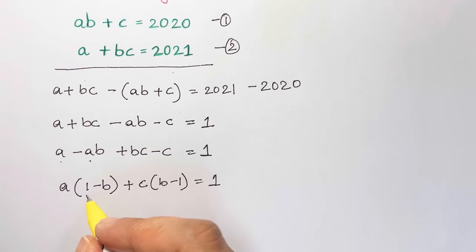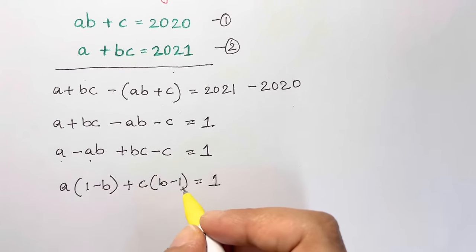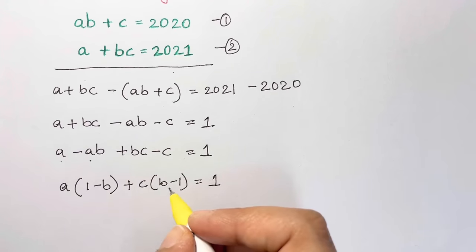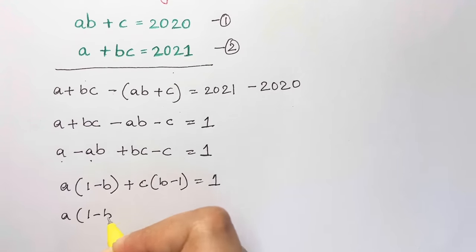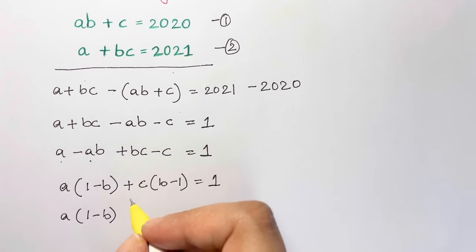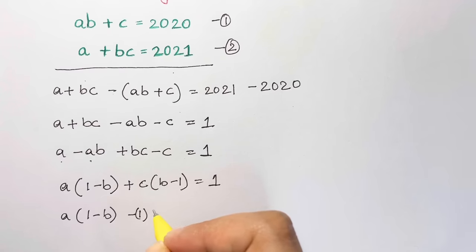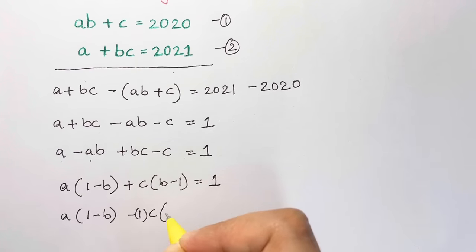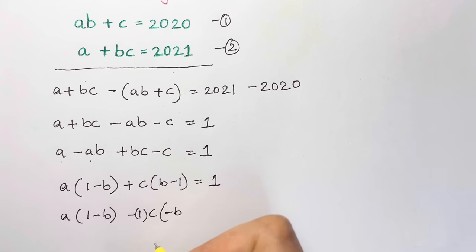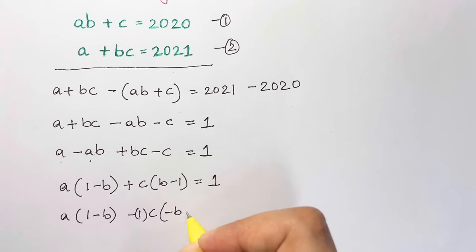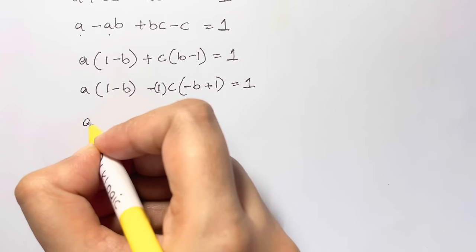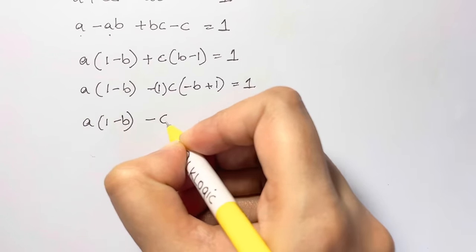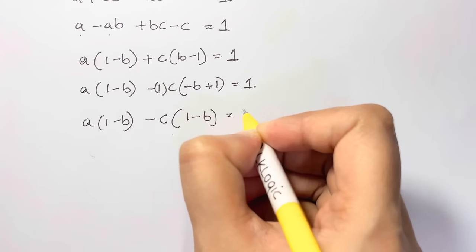Now I have (1 minus b) and (b minus 1) — they're not the same, there's a difference of signs. So let me make them similar. I have a·(1 minus b), and for the c term I take minus 1 outside, giving minus c·(minus b + 1), which simplifies so that minus 1 times (b minus 1) becomes minus(b minus 1), equal to 1.